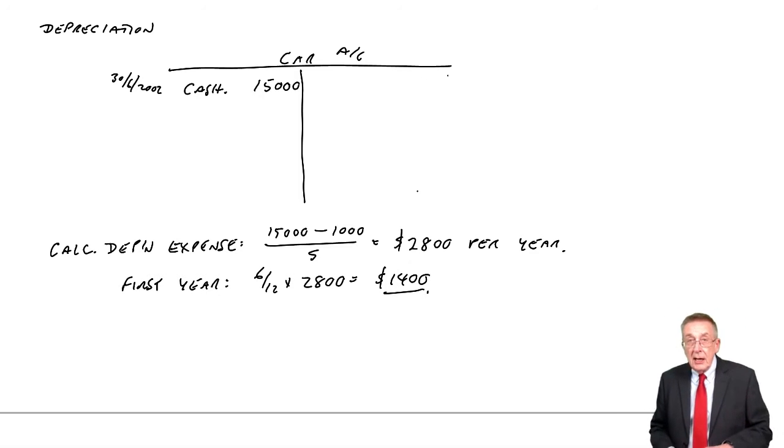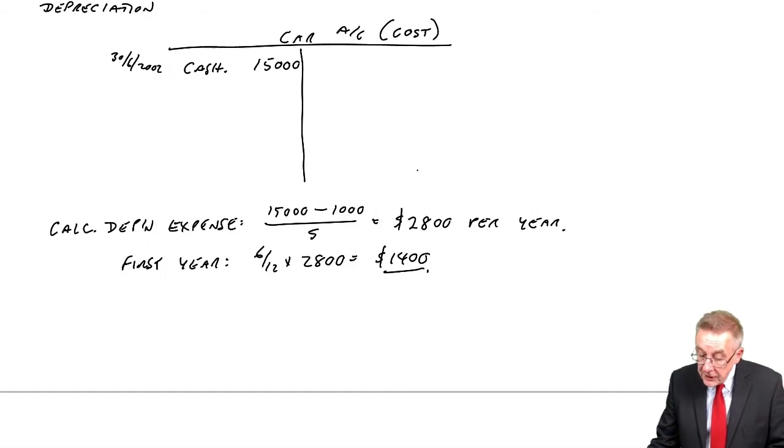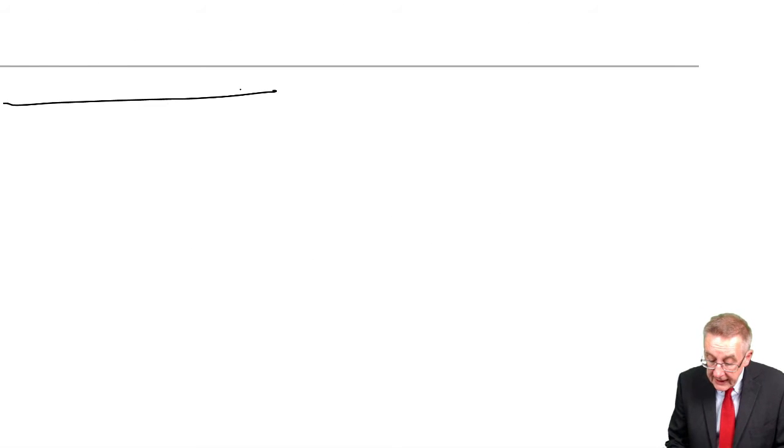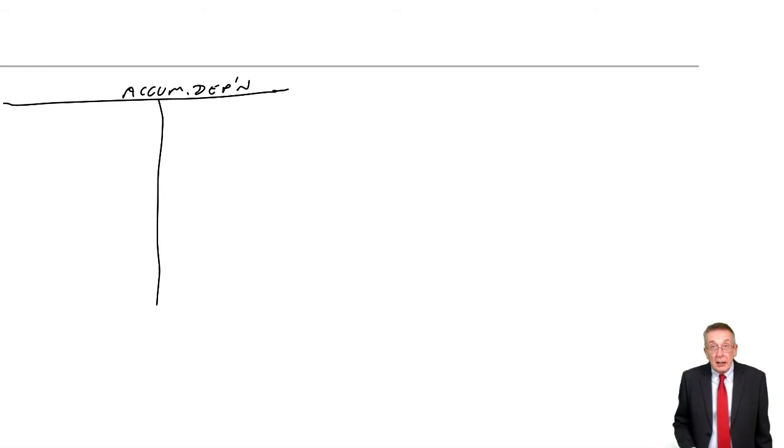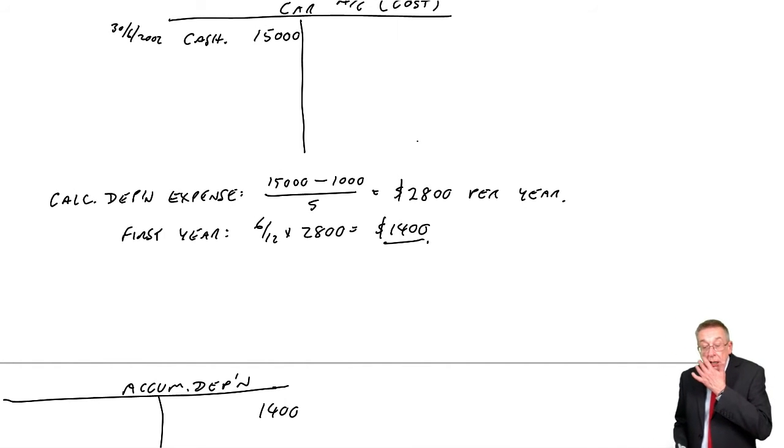And so, in fact, we leave the car account as it is, showing the cost. We open up a new account called accumulated depreciation. And instead of crediting the car with 1,400, we credit accumulated depreciation. And when we come to do the statement of financial position, we'll put the two together. We'll say on the car account, there's a debit of 15, the cost. On accumulated depreciation, there's a credit of 1,400, the total depreciation. And we'll subtract one from the other and show the net value on the statement.